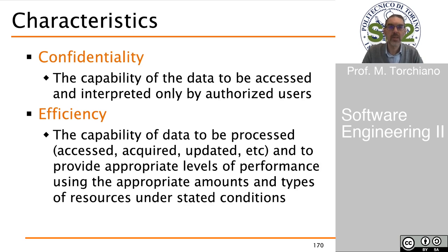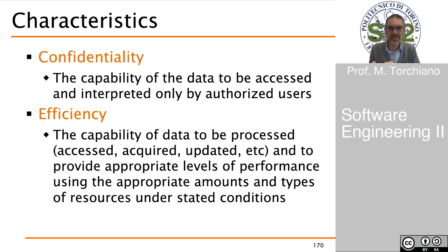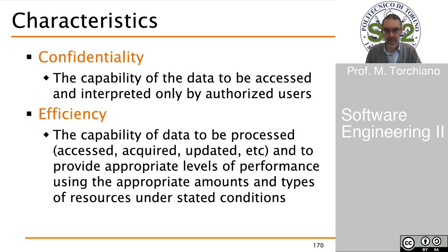Confidentiality regards the capability of the system to keep the data from unauthorized users — this is clearly system dependent. We need enough inherent information to determine who is authorized, but once that is granted, we focus on how the system manages the data. Efficiency is the capability of the data to be processed — meaning accessed, acquired, and updated — in a way that achieves good performance in terms of processing time and storage capacity.